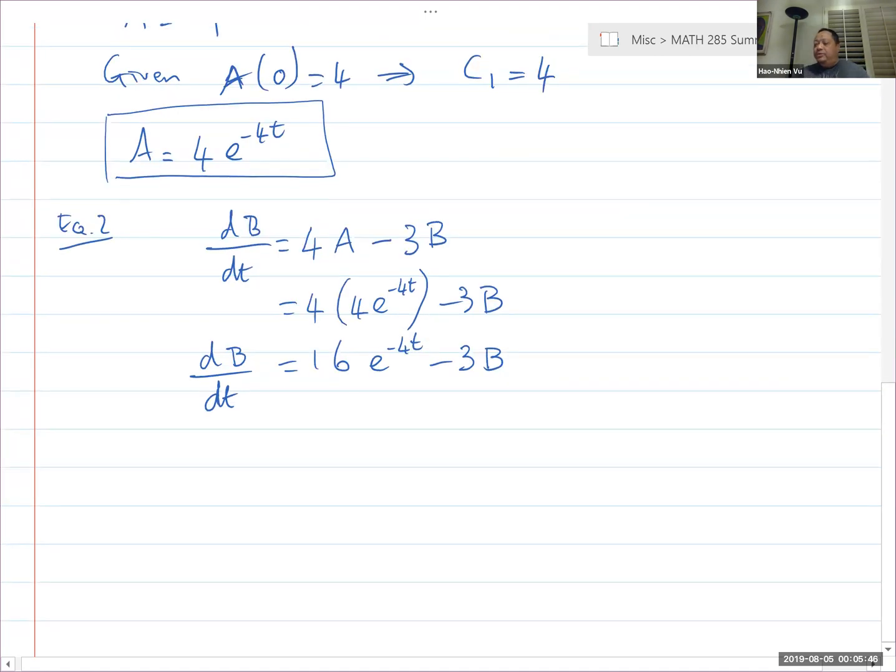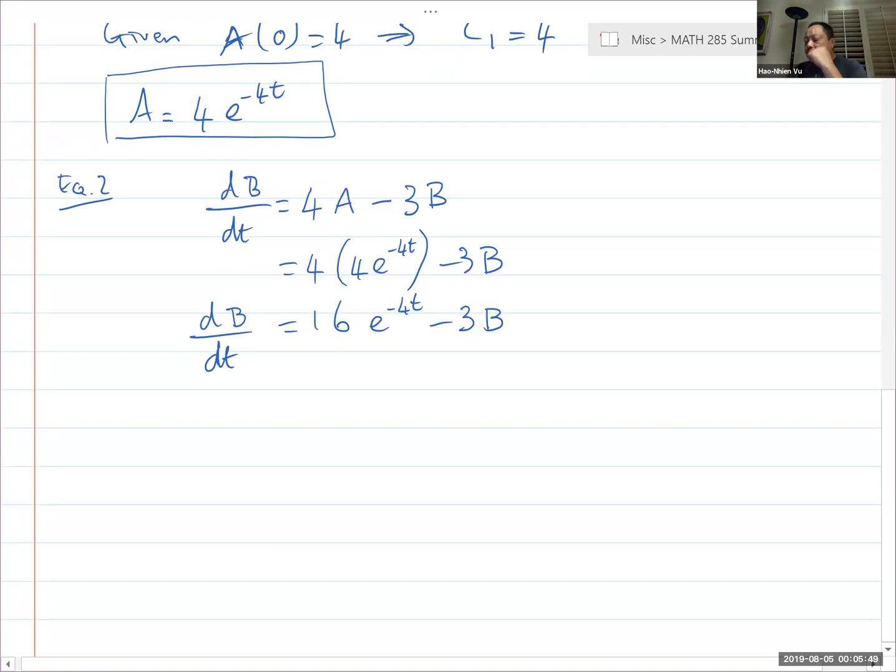So that's my dB/dt. All right, so this is my new equation two. And it's a linear equation. So I can solve it using integrating factor. Okay, so I'm going to move everything to one side. Here, we have my dB/dt plus three B is equal to 16e^(-4t).